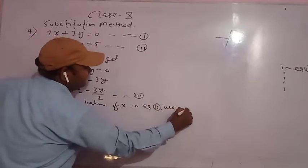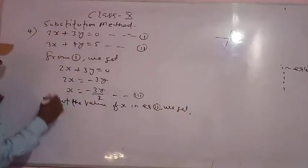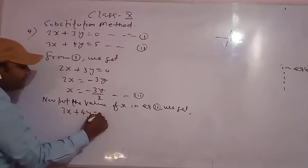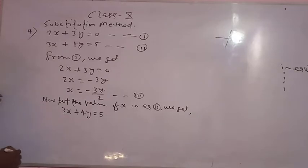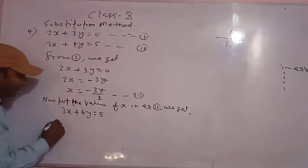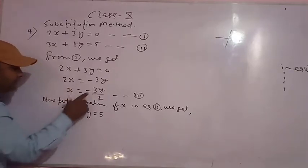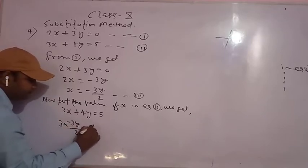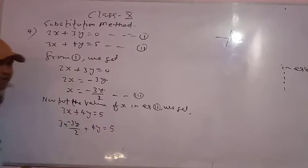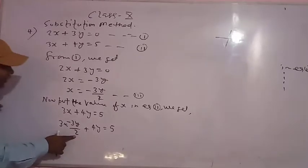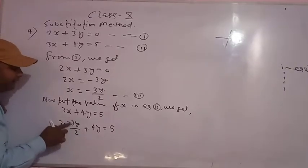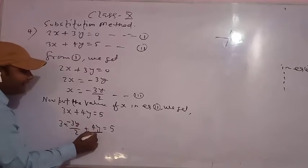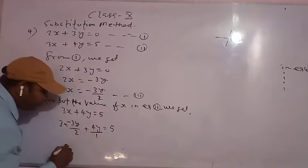We get: the second equation is 3x plus 4y is equal to 5, and the value of x is minus 3y by 2. Students, 2 will not cancel 3 perfectly, so we have to take LCM — LCM of 1 and 2.